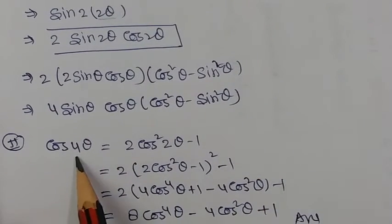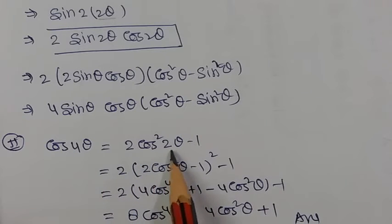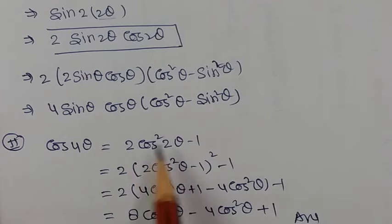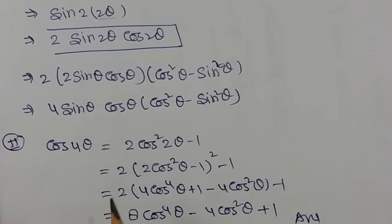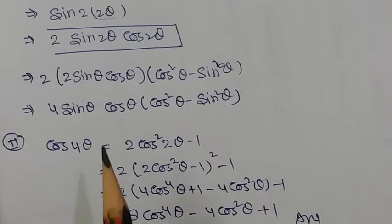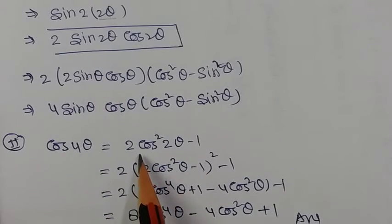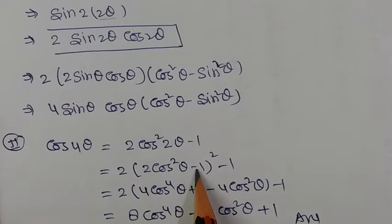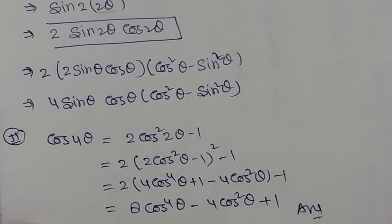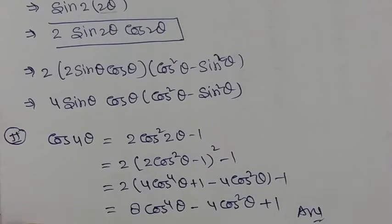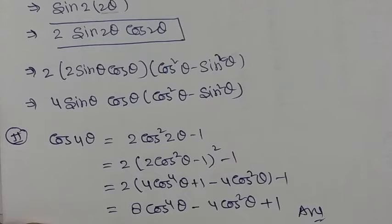For cos 4θ: cos 4θ equals 2 cos²(2θ) − 1. Then cos 2θ equals 2cos²θ − 1, so substitute this whole square and calculate to get the result. For tan 4θ, convert tan 4θ to tan 2θ and then tan 2θ to tan θ to get the final formula. This is basic formula arrangement work.